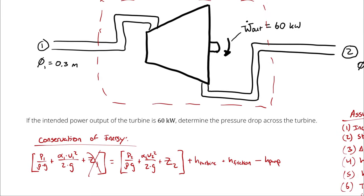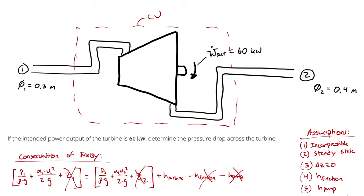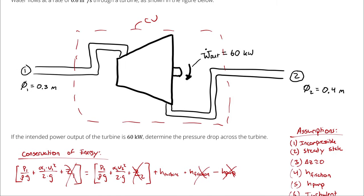So far, we've been able to eliminate certain terms. Can we neglect the changes in kinetic energy like we did last time? No, because we have a change in cross-sectional area. We were told a diameter at the inlet and the outlet, and that change in diameter is going to mean — because we have the same mass flow rate and incompressible flow — that we have a different velocity at states one and two. It may not be significant, but we should include it because we can.